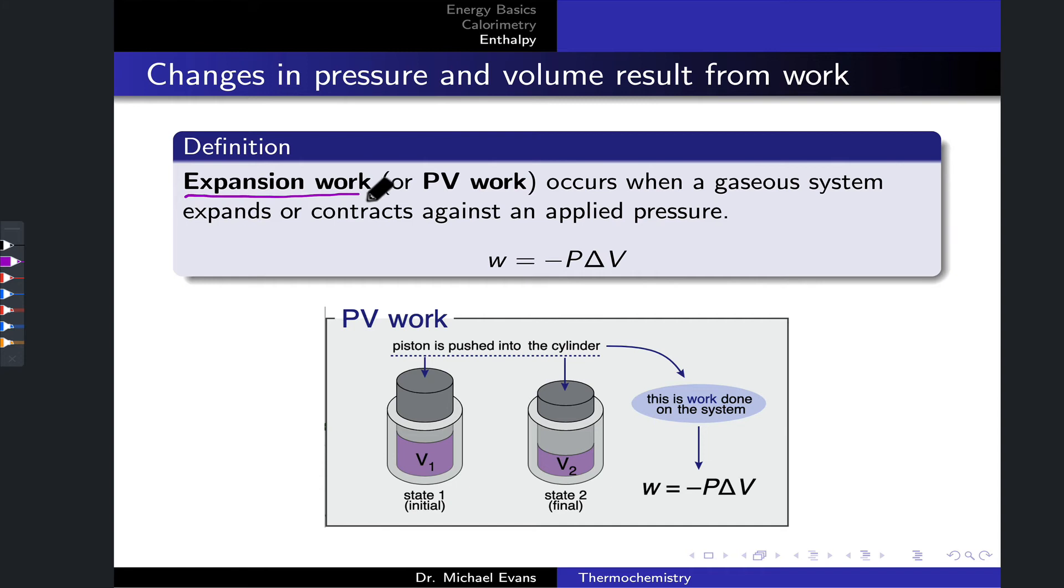And the particular type of work that a gas can do or that can be done on a gas is called expansion work. Now, this is a bit of a misnomer as compression is a type of work done on a gas, but when a gas expands, that gaseous system is doing work on the surroundings. Because expansion is a bit of a misnomer, this is also called PV work because it results from changes in the pressure and volume of the gas as it's compressed or it expands.